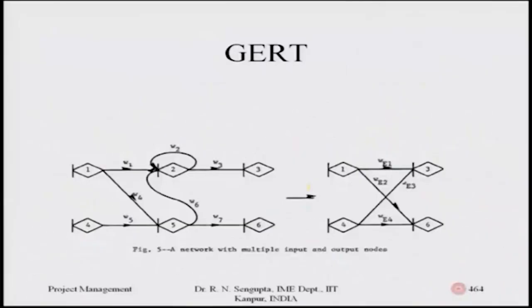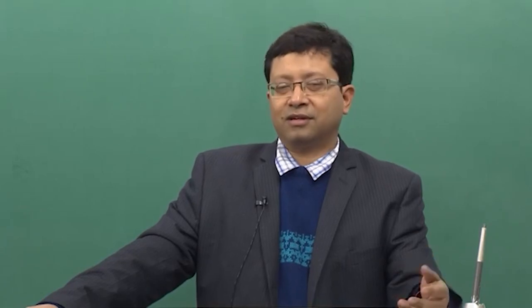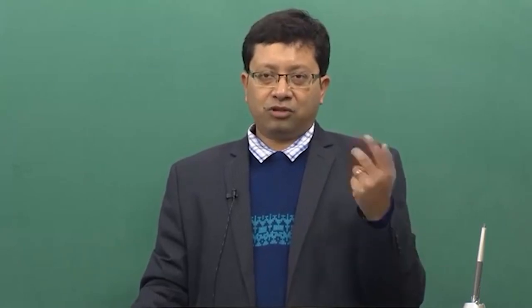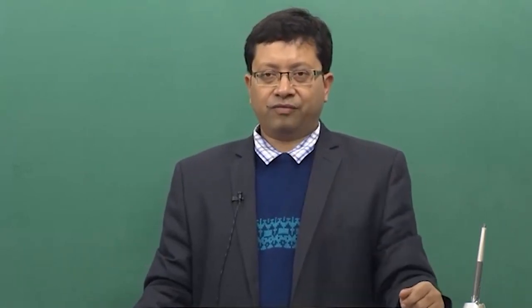For networks with multiple inputs and unparalleled outputs, a diagram illustrates the equivalent concept. The looping, series, and parallel combinations are applied, remembering that you have probability, time, and W functions. Combine the W functions in whatever configuration applies, differentiate, put the dummy variable S to zero, and find the equivalent values — then extract the probabilities and equivalent time.